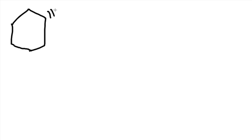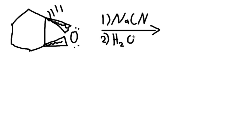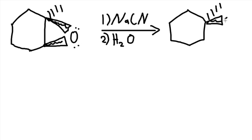Let's try another example. We have a ring with a wedge showing an epoxide. Our reagent is a base — NaCN with water. It attacks the carbon with the least amount of substituents, which is the bottom portion of the ring. So we have an OH there and a CN attached to the molecule on a wedge.